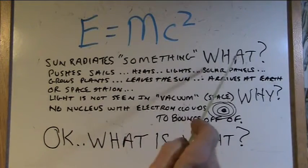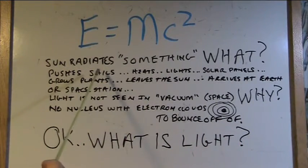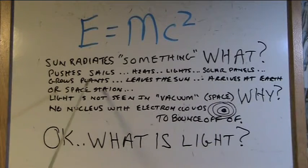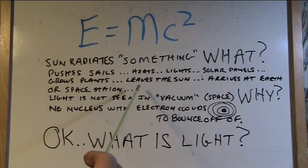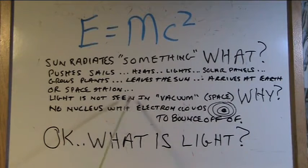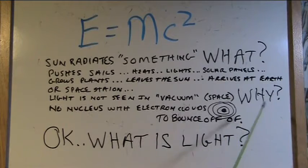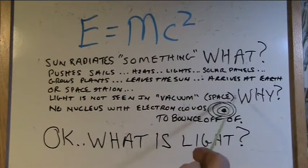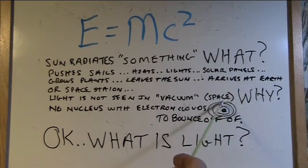The sun radiates something. We know that it pushes sails, heats things when it hits us, lights things up, makes electricity go into solar panels, grows plants. It leaves the sun, we know that for a fact. It arrives at Earth, or it hits a space station out in space. So light is not seen in the vacuum of space. Why? The reason is no nucleus with electron clouds to bounce off of. There's no complete nucleuses with electrons in space to hit.